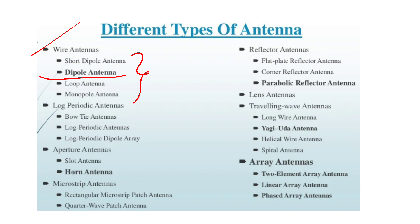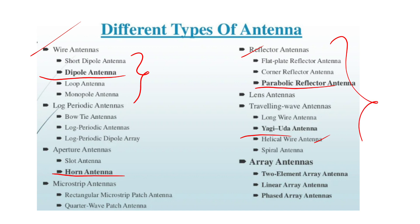Antenna types include: the log periodic antenna, bow tie antenna, long period dipole antenna, and aperture antenna. Also dipole, horn antenna theory and working are important. Microstrip antennas include rectangular microstrip patch and quarter wave patch. Reflector antennas — parabolic reflector — are important. Also: lens antenna, traveling wave antenna, helical antenna, and array antennas with two elements, linear and phased arrays.